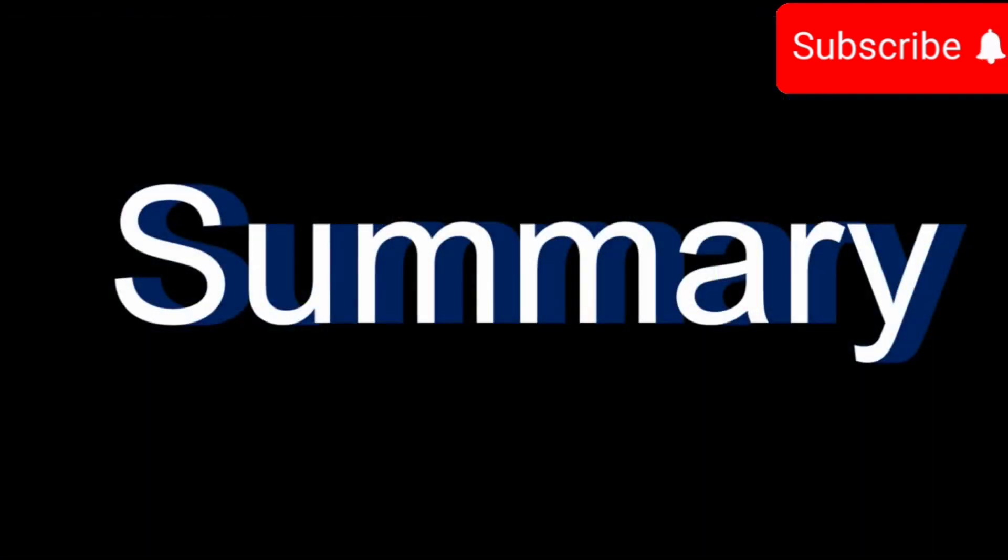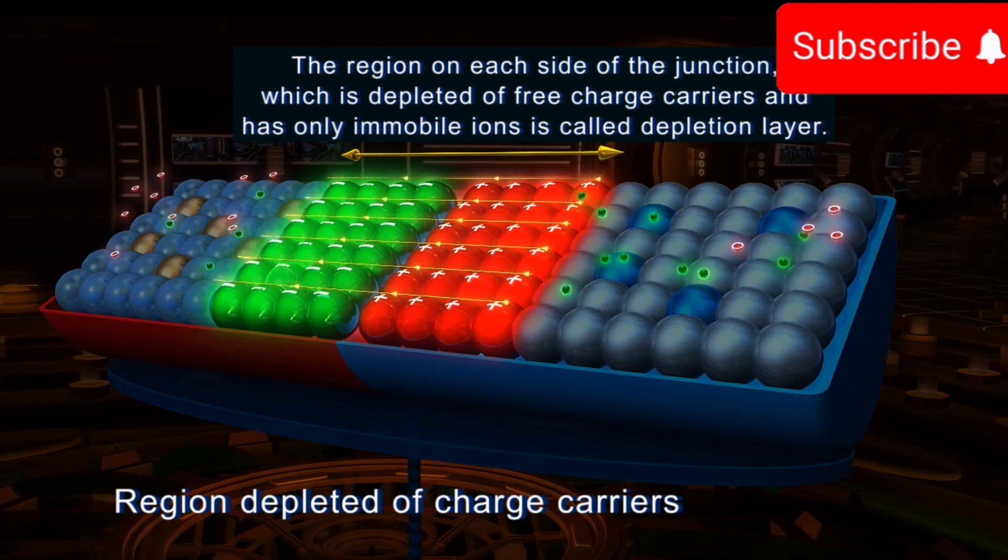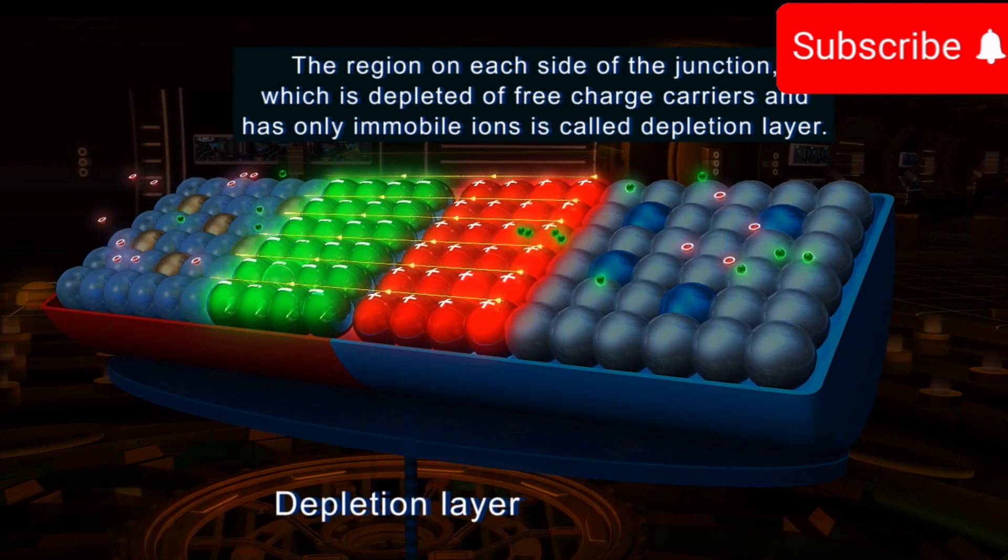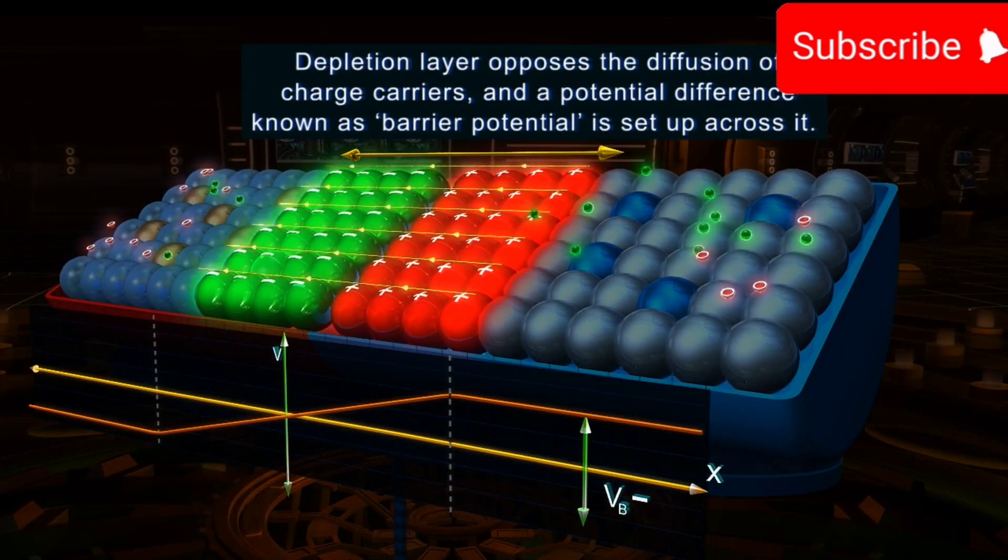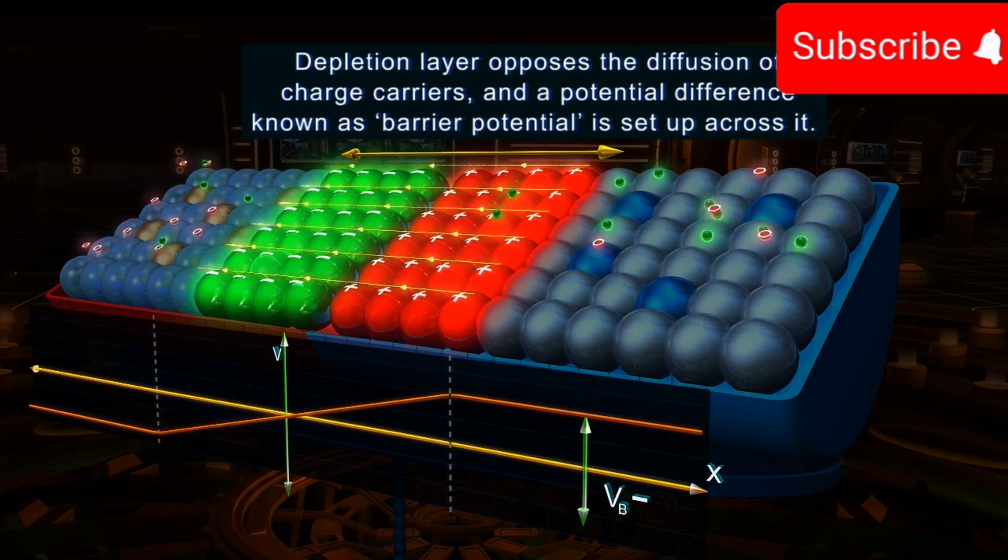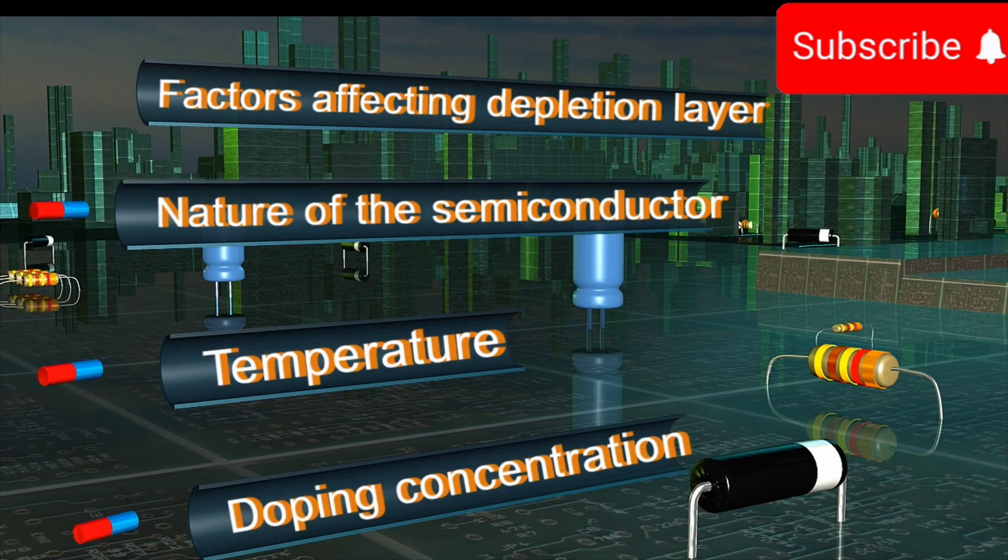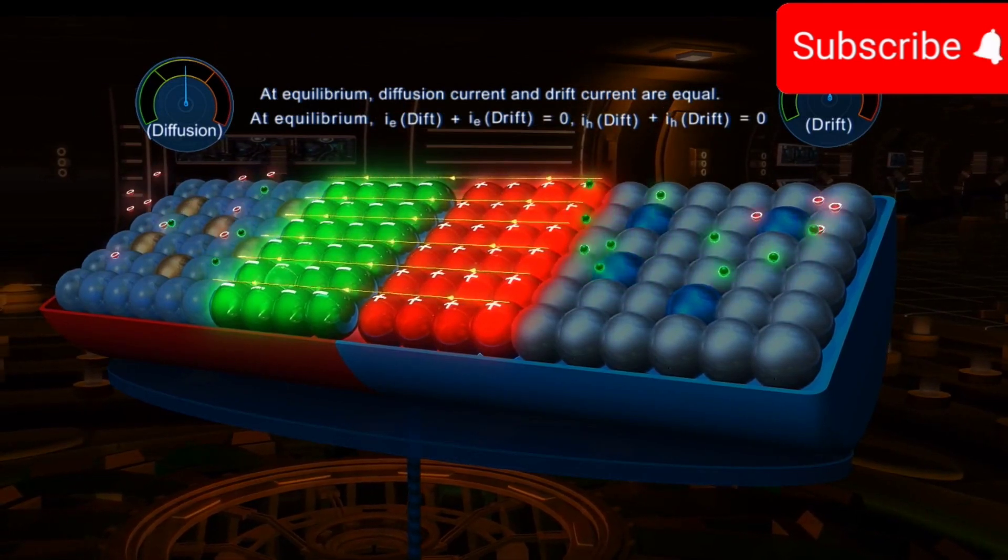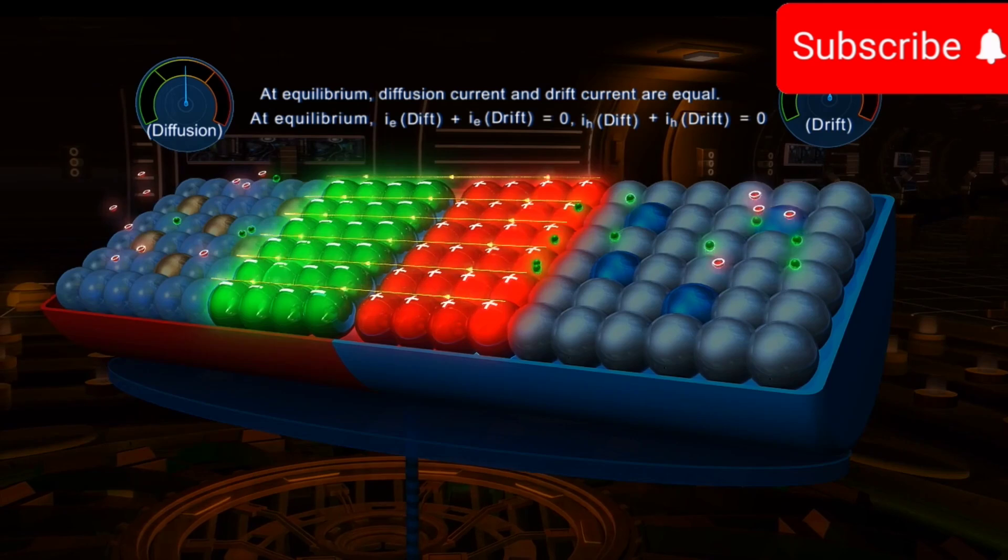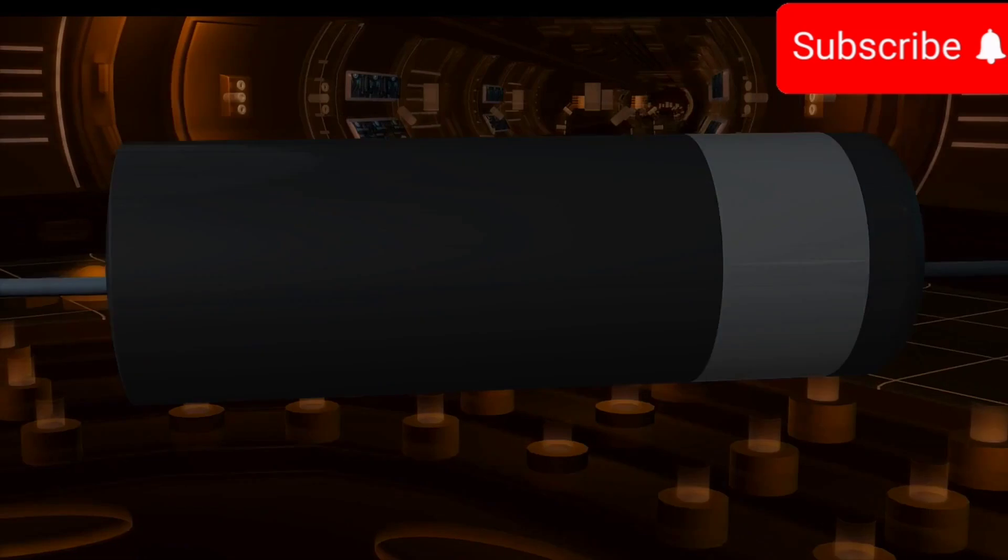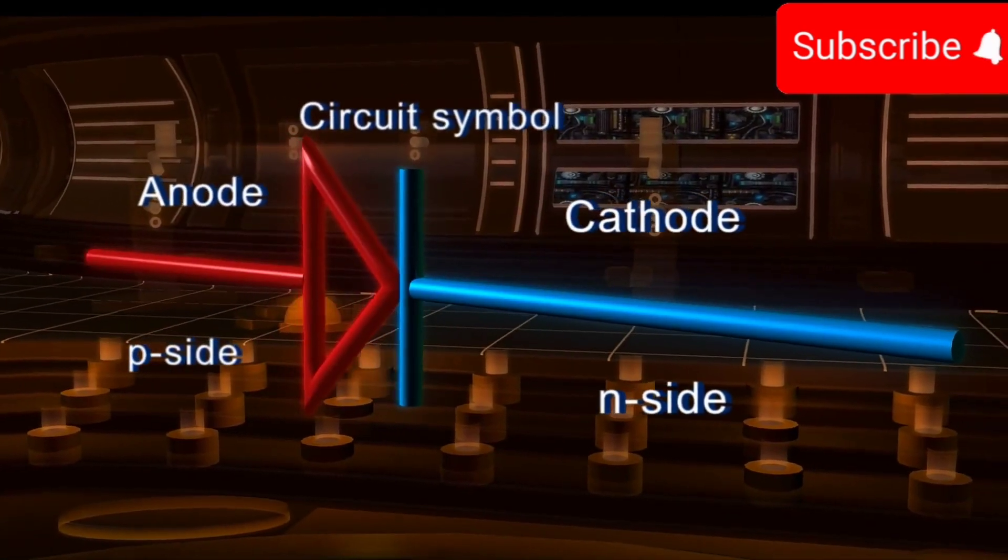To summarize, the region on each side of the junction which is depleted of free charge carriers and has only immobile ions is called the depletion layer. Depletion layer opposes the diffusion of charge carriers and a potential difference known as barrier potential is set up across it. Width of the depletion layer depends on the extent of doping and the temperature for a given P-N junction. The drift current and the diffusion current are equal in magnitude but opposite in direction for each type of carrier. A diode is represented using the symbol as follows.